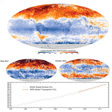Carbon dioxide is an important trace gas in Earth's atmosphere. It is an integral part of the carbon cycle, a biogeochemical cycle in which carbon is exchanged between the Earth's oceans, soil, rocks and the biosphere.